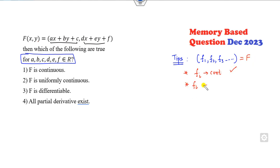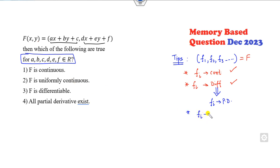If each of the Fᵢ's are differentiable, then capital F is also differentiable, and we all know if F is differentiable then the partial derivative exists. The question arises: what is the meaning of uniform continuity? If you prove that each of the Fᵢ's is continuous, and the coefficients of the xᵢ's are bounded, then it implies uniform continuity.